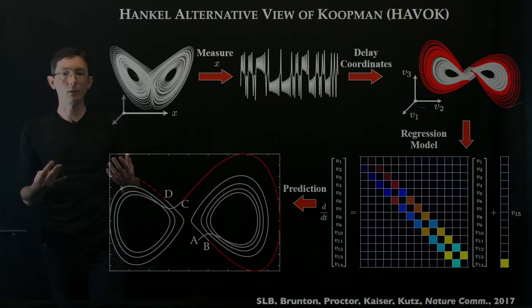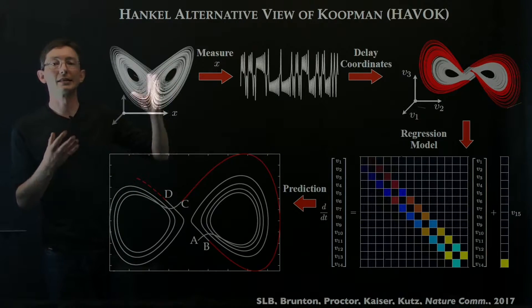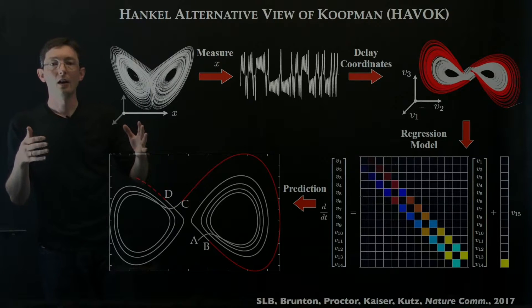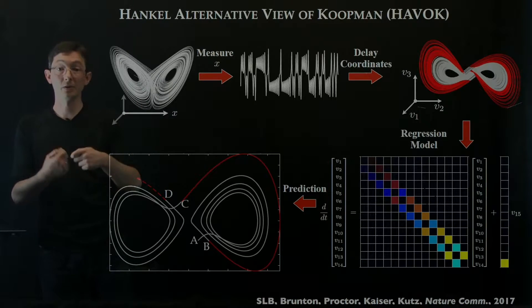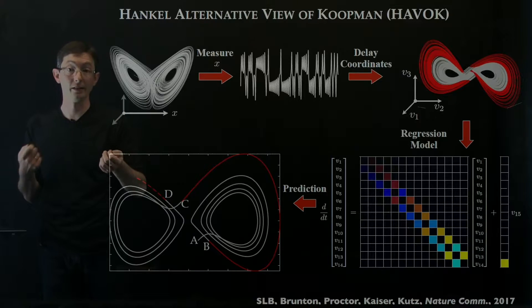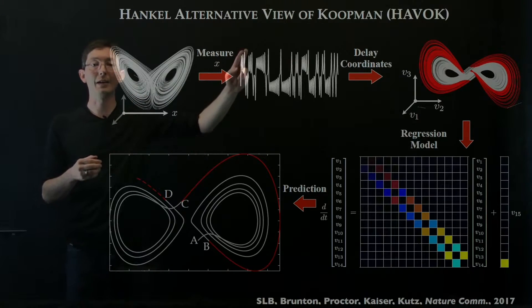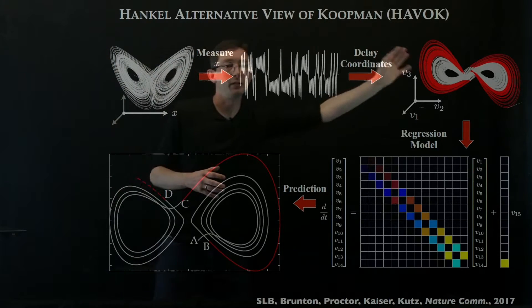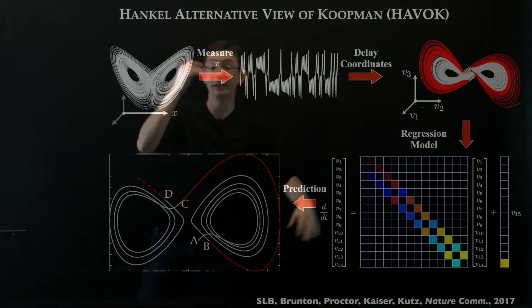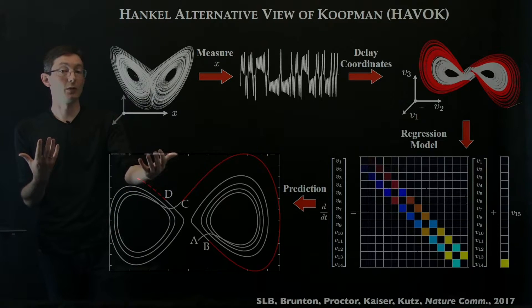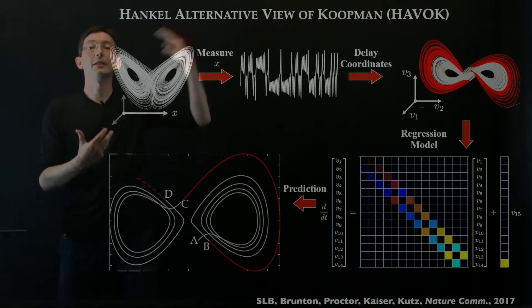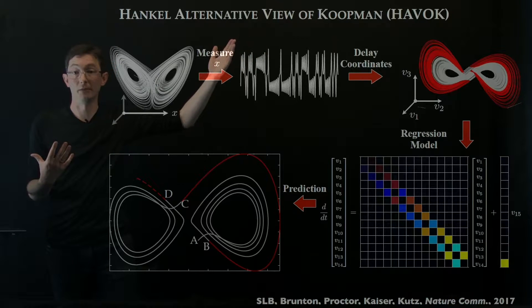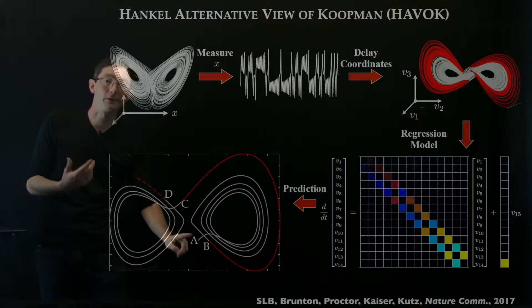Essentially what we realized was that these time delay coordinates in some sense are very good measurements for Koopman analysis. Measuring time delayed histories of my state measurement embeds me in a coordinate system where my dynamics look approximately linear. If I'm embedded in a coordinate system where my dynamics look linear, then I have found a Koopman representation. You can use it in this case for prediction.